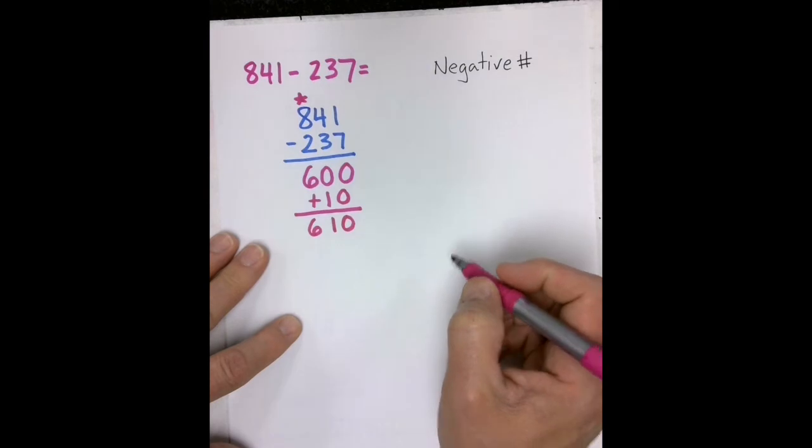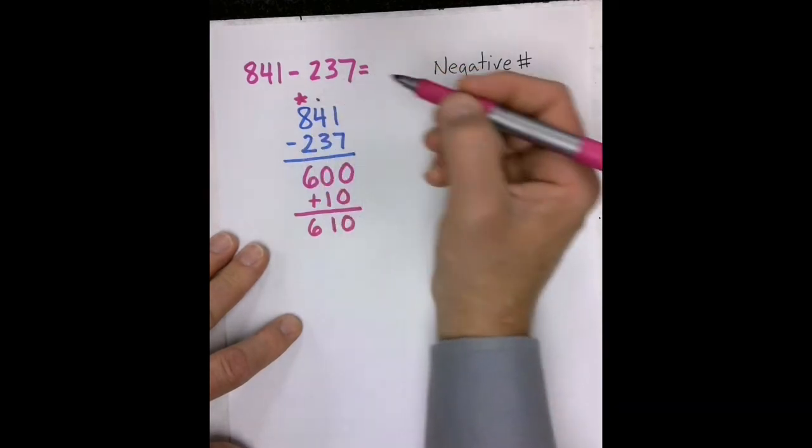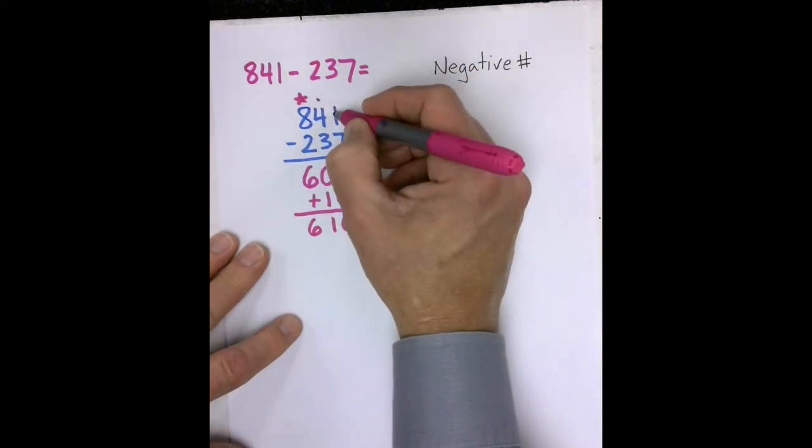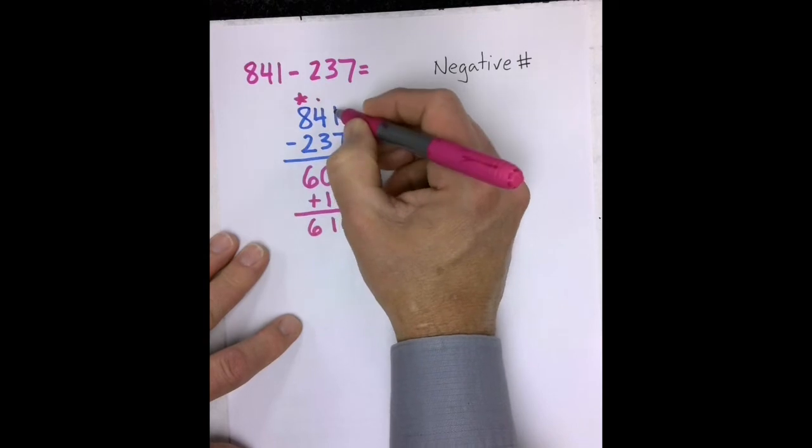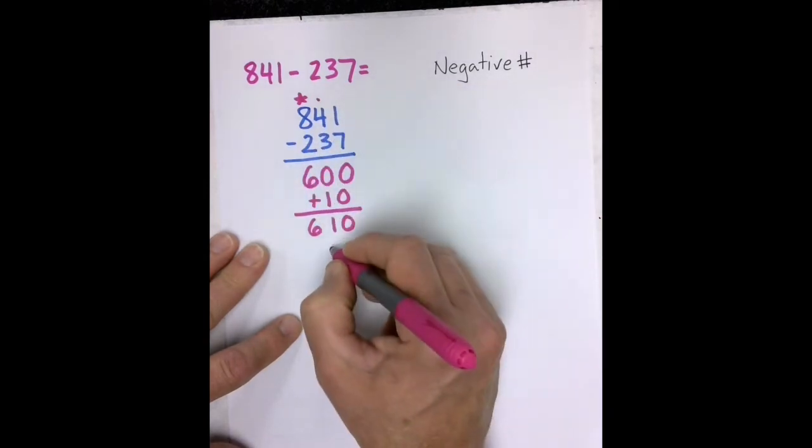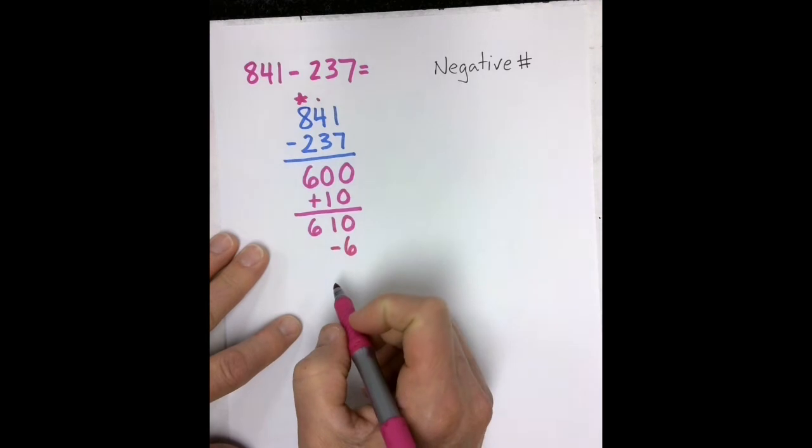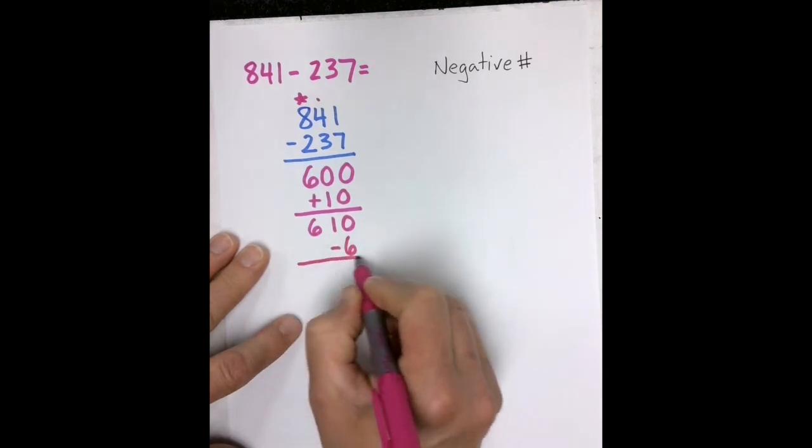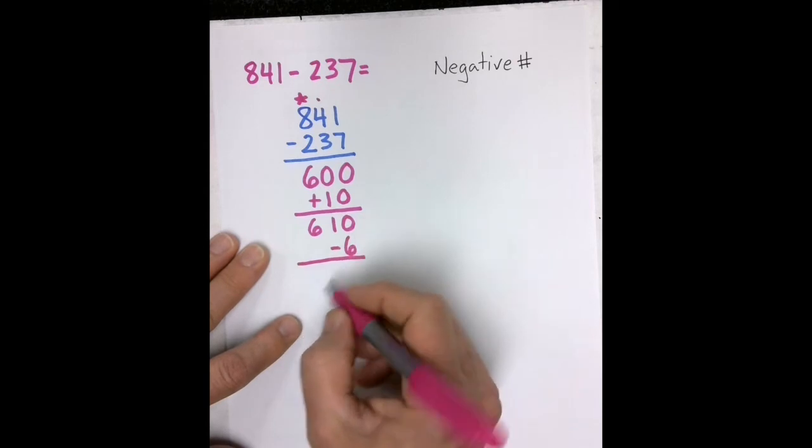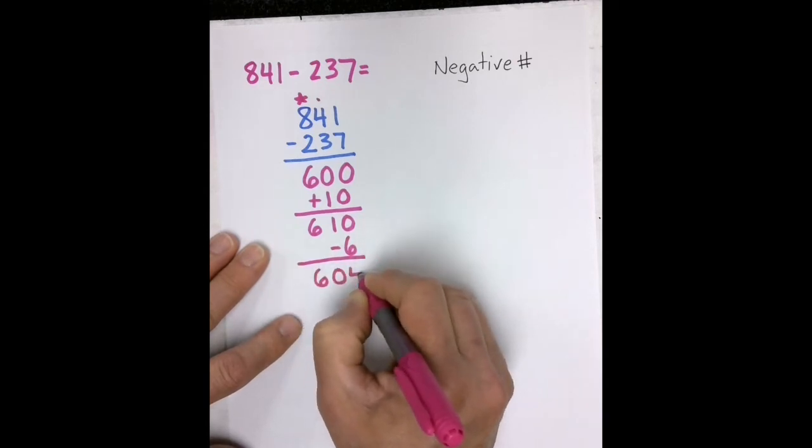My next column, after I've finished with the tens, is the ones. I have 1, and I'm taking away 7. So 1 minus 7 is a negative 6. Now I can combine my 610 and my negative 6, or 610 minus 6, which would be 604.